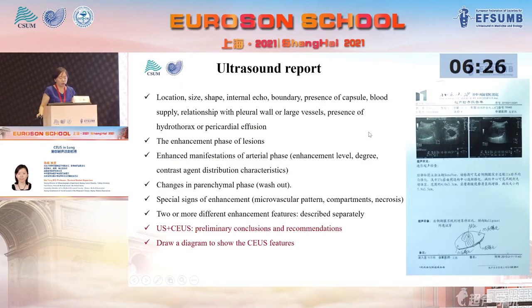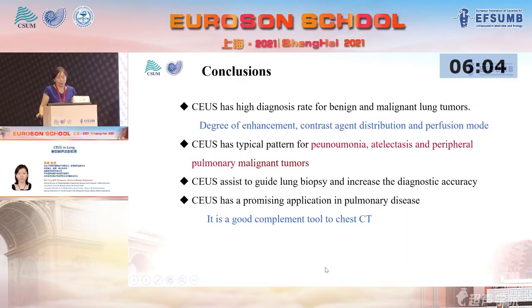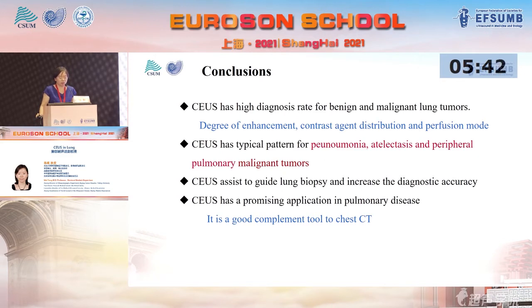Regarding the ultrasound report: besides the diagnostic criteria discussed above, we provide a preliminary conclusion and recommendations for the clinical doctors. It is also recommended to include a diagram showing the CEUS features in the report. In conclusion, CEUS has a high diagnostic rate for benign and malignant lung tumors, shows typical patterns for pneumonia, atelectasis, and peripheral pulmonary malignant tumors, and helps to guide lung biopsy to increase diagnostic accuracy. CEUS has a promising application in pulmonary disease.